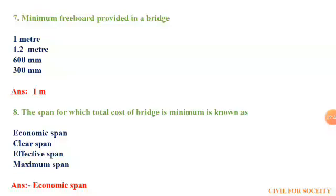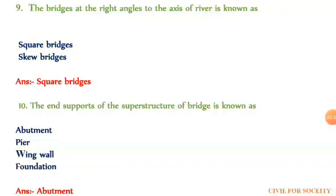The eighth question: the span for which the total cost of bridge is minimum is known as. The first option is economic span, second is clear span, third is effective span, and fourth is maximum span. The answer is economic span. The ninth question: the bridge at a right angle to the axis of a river is known as. The first option is square bridge and the second is skew bridge. The correct answer is square bridge.